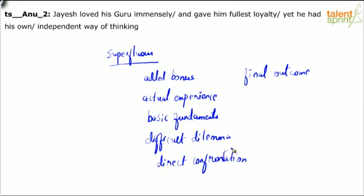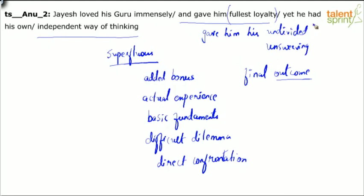Direct confrontation. Confrontation means head on. You are directly getting into a fight or debating with this person. Final outcome. Outcome is an end result. I want you to kind of keep these things in mind. So here basically in this question we have two errors. One is in part B and the other one is in part D. So we've understood that this is not the right collocation. We have to add the expression gave him his and then add the right colloquial expression which can be either undivided or unswerving. And then we said part D, we don't need independent. Let's move on to the next one.